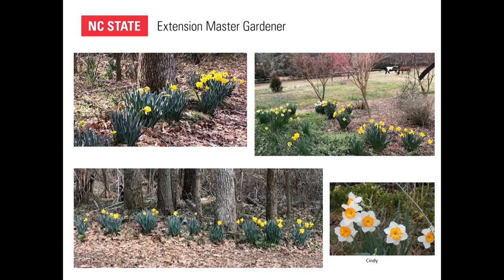I particularly like the single tulips, not the doubles, because the doubles tend to make the heads heavier and they look at the ground instead of at you. In this picture you can see some in the back that haven't started to bloom yet because they're in a heavily wooded area and don't get as much sun — they're farther behind. With daffodils, if you look at catalogs you can get early, mid-season, and late — so you can have three or four months of daffodils if you plan it right.